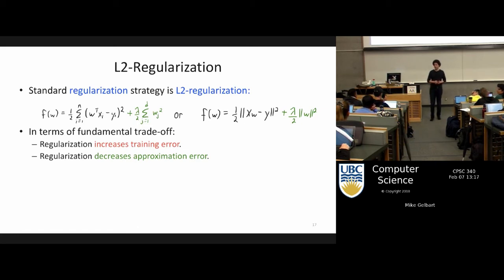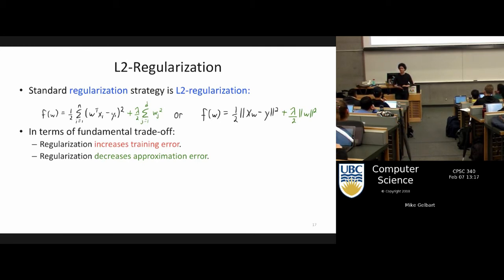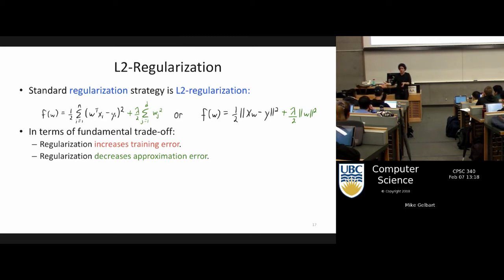Q: Can you explain why large W causes overfitting? A: I will. Q: I didn't understand your intuition about why regularization increases training error. A: If you throw away the regularization term, that's just the squared error — the training error. Here are two universes: one, find the W that minimizes training error — that's what we were doing before. Two, find W that minimizes something else. How could the training error be better? In one case we directly minimized it, so of all the W's in the universe we picked the best one. Now we have different criteria for choosing W, and without knowing what it is, it couldn't make training error better because we already made it the best. It could stay the same or make it worse.